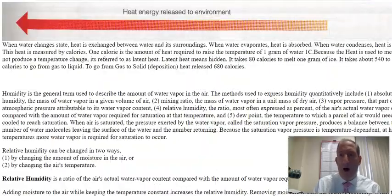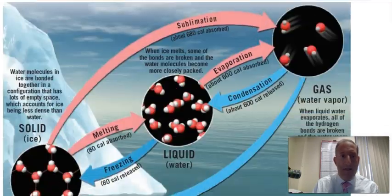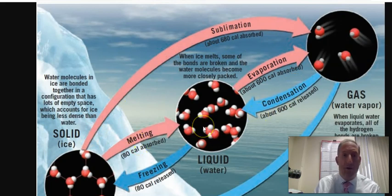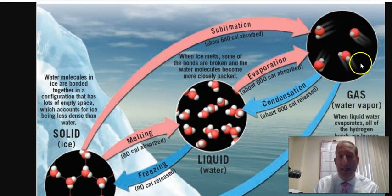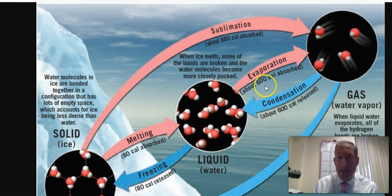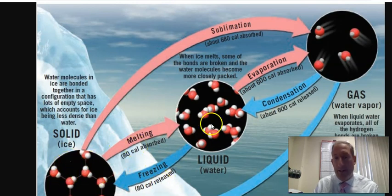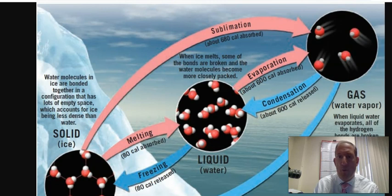At the beginning of this chapter, understand dew point and humidity, and the phase-change diagram on pages 85 to 87. Going from gas to liquid is condensation — about 600 calories. Liquid to gas is evaporation — about 600 calories. Solid to gas takes about 680 calories. Liquid to solid is freezing — 80 calories. Solid to liquid is melting — about 80 calories.